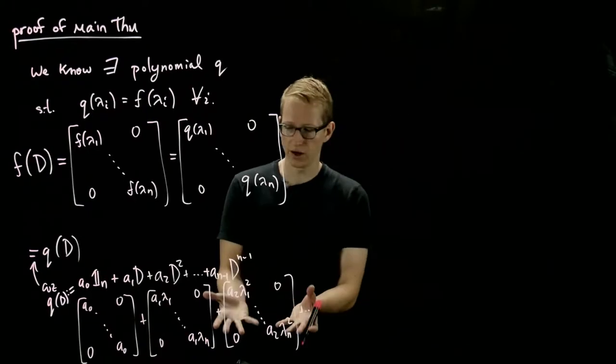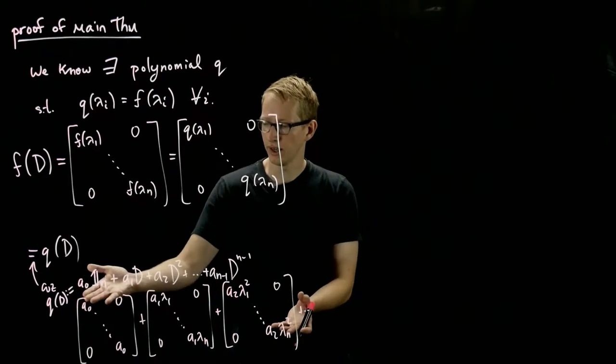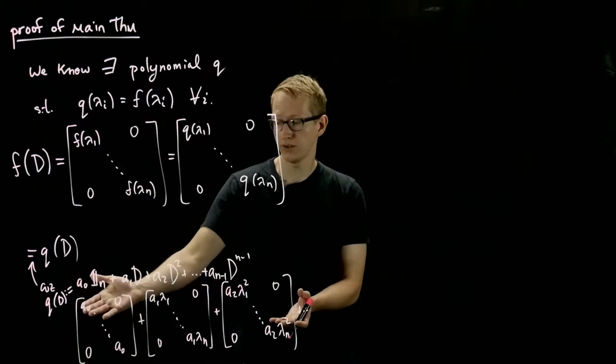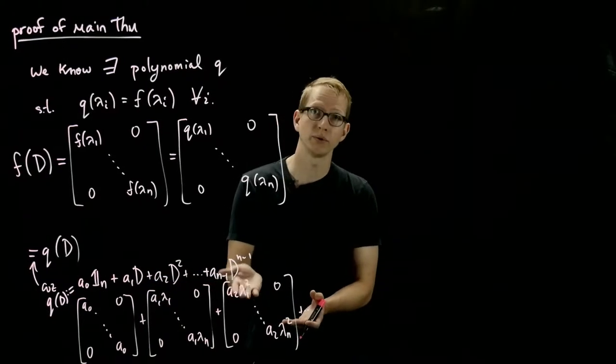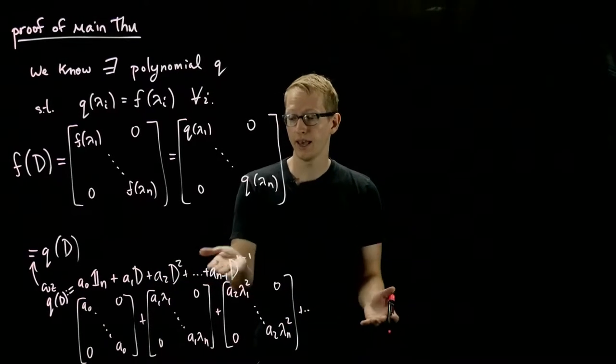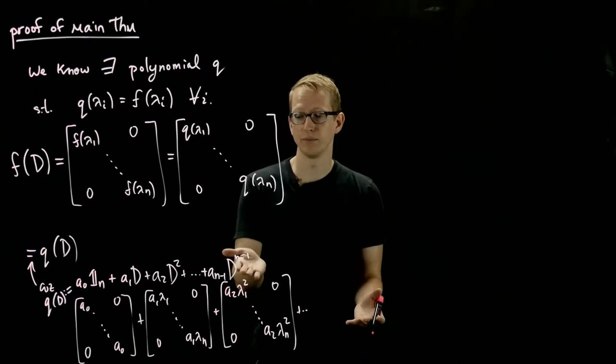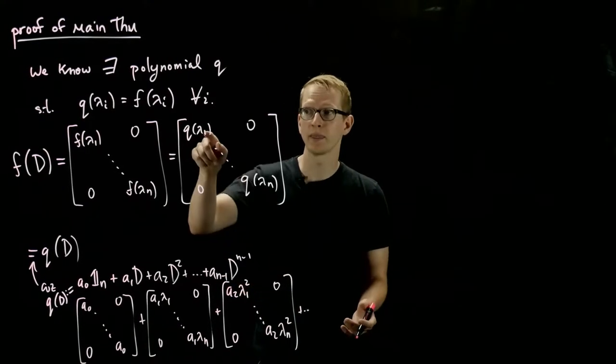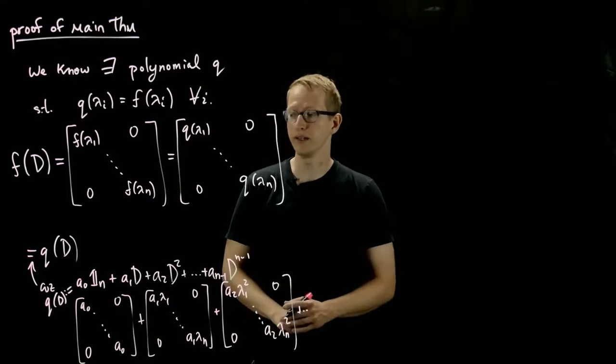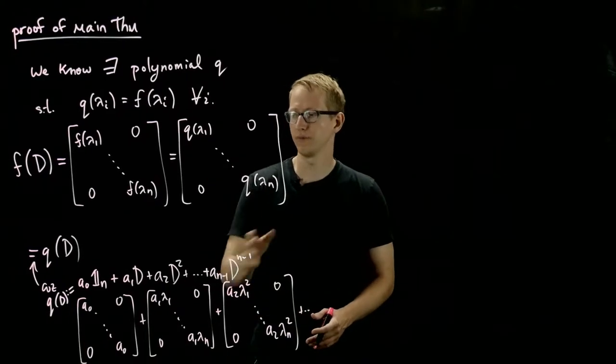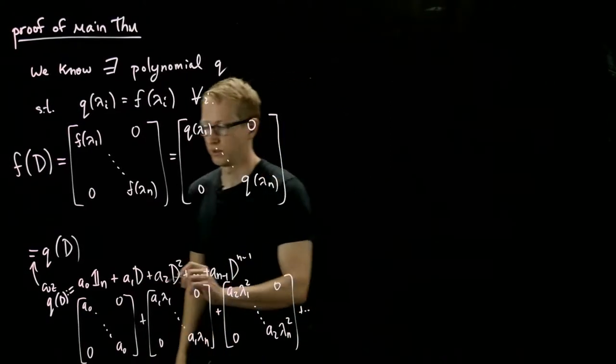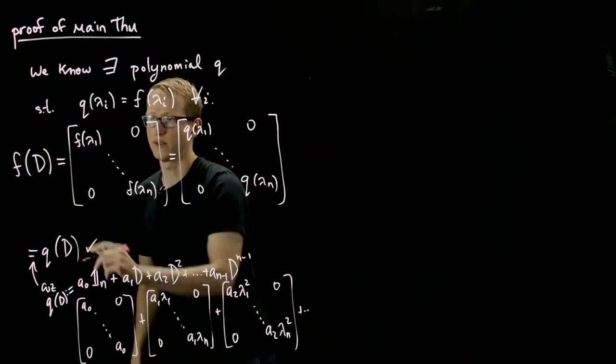Then what happens when you add all of these matrices together? Well, you get A0, on the top left term, you get A0 plus A1 lambda 1 plus A2 lambda 1 squared plus dot dot dot A n minus lambda 1 to the n minus 1. That's exactly what q of lambda 1 is. And similarly for all of the other terms. So this justifies why this equality holds.